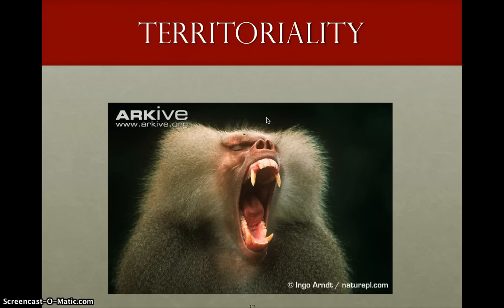So that's an example of cost-benefit analysis — simply weighing the advantages versus the disadvantages of a trait. That covers section 16.2. There's a little bit more on red male deer, so be sure to read that on your own. And that's natural selection.